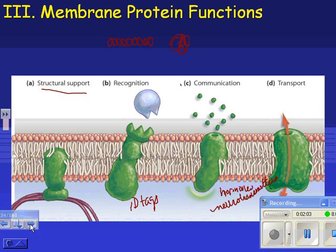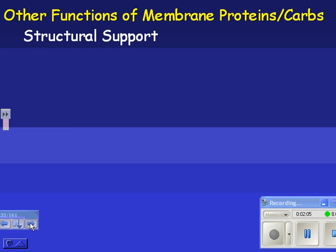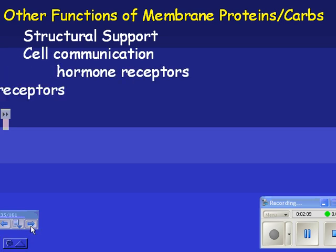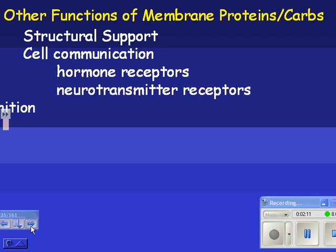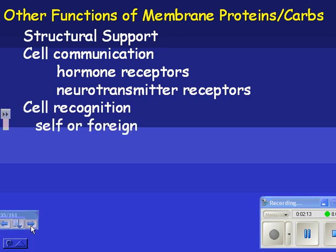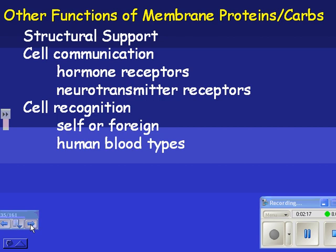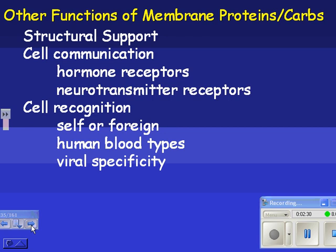So we're going to look at each one of these in a row. Structural support; cell communication would be things like hormone receptors and neurotransmitter receptors; cell recognition would be an ID tag — is this cell self or is it foreign? Human blood types are just an example of that. And then viral specificity — there are proteins that a virus could fit into on a cell, and if they're there it can infect the cell, and if they're not there, it can't.